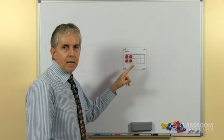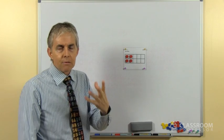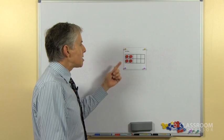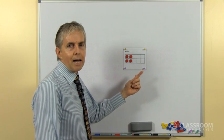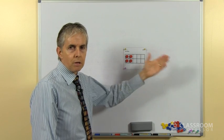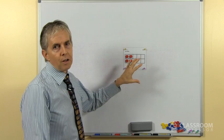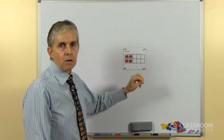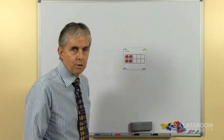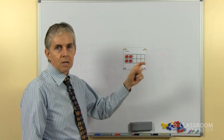The beauty of this is that because there are 10 squares on a 10 frame and that of course is because our number system is based on the number 10, we can see how many there are by comparing the number of counters with the full frame or the complete frame. Up to 4 or 5 it's not too bad, it's not too difficult to subitize the number anyway and say well that's 4 because I can see 2 rows of 2 and that sort of thing. But with the larger ones we get to see how many there are simply because there's a certain number of gaps.